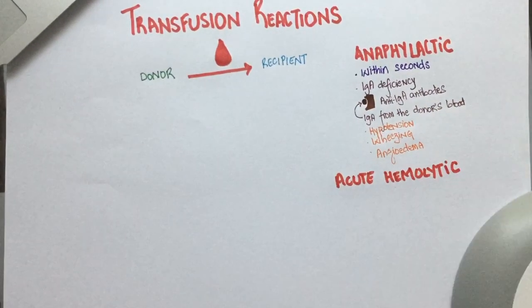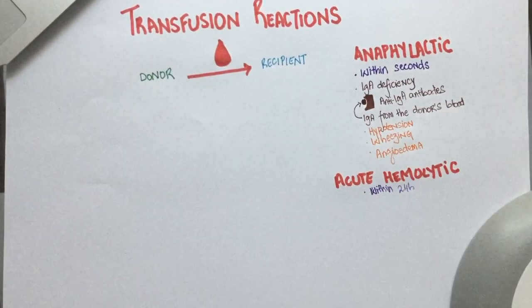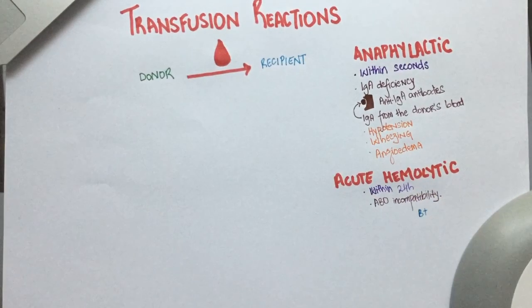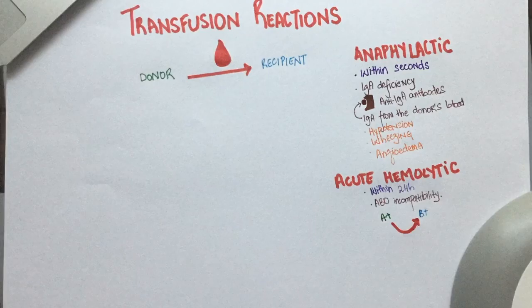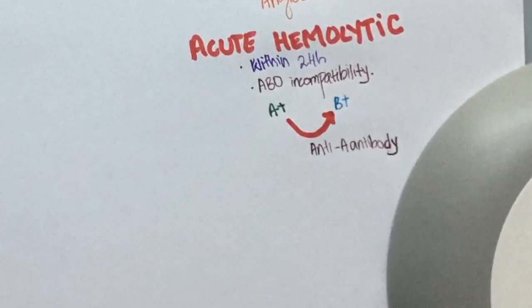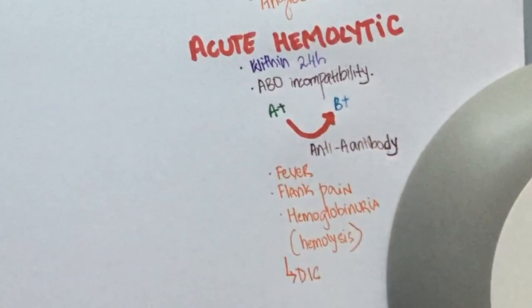The second one is acute hemolytic reaction. This takes place within the first 24 hours of transfusing blood. The main reason for acute hemolytic reaction is ABO incompatibility. If a patient who is B positive receives blood from a patient who is A positive, the antibodies will attack the red blood cells and cause hemolysis. Common symptoms are flank pain, fever, and hemoglobinuria. Severe cases can also progress to DIC.